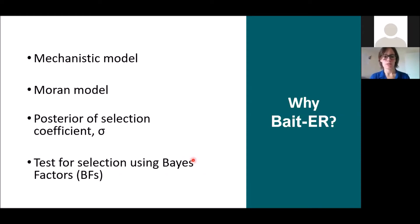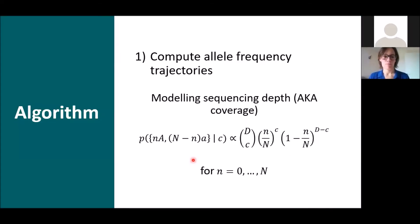As I've told you, because this is a Bayesian method, we then calculate the posterior distribution of this selection coefficient sigma. And the final step is really just testing for selection by calculating the ratio of the likelihoods between two alternative models. This is just what is commonly called the Bayes factor. In our case, we're comparing two different models, one with selection and a second one without selection.